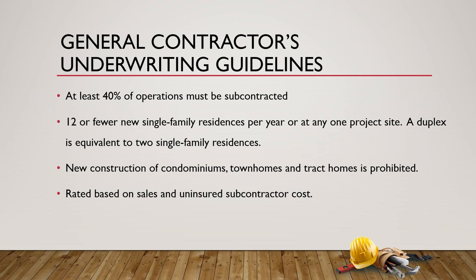For the GC underwriting guidelines: at least 40 percent of operations must be subcontracted. If they're under that threshold, we'll put them under the artisan class code and list out all the different trades they're performing. If they're at least 40 percent in sub costs with insured subcontractors, we're okay keeping them as a GC. We can write 12 or fewer new single-family homes per year at one site — note that a duplex is equivalent to two single-family homes. We do not write new construction of condos, townhomes, or tract homes. GCs are rated on sales and any uninsured subcontractor costs.